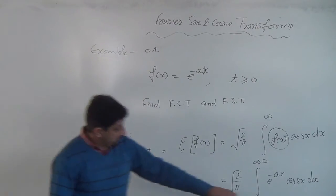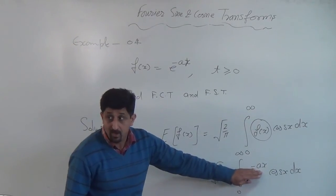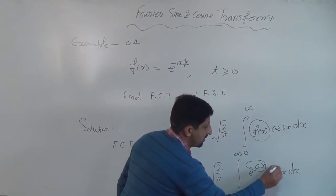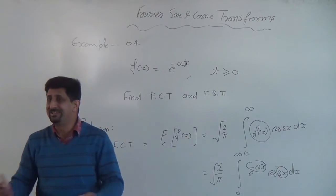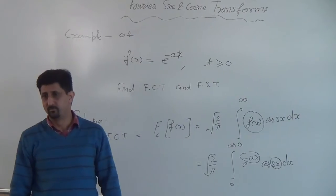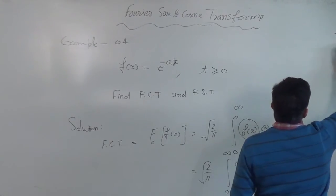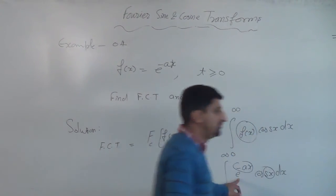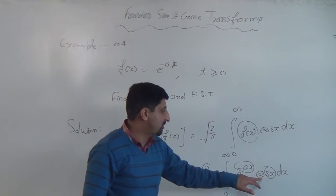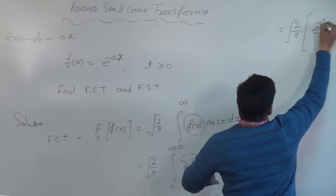e^(-ax) cos(sx) dx. Now here you should know the formula of this: integral of e^(alpha x) cos(beta x). If you know the formula only then you will find out this integral. Only then you will find out this problem. So this is 2 upon pi. We start with the bracket and you know the formula of e raised to the power alpha, alpha to be minus a, and cos beta x, beta to be s.